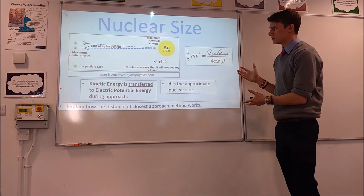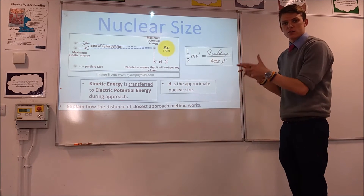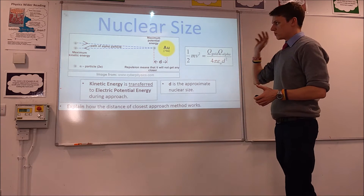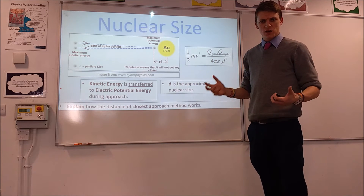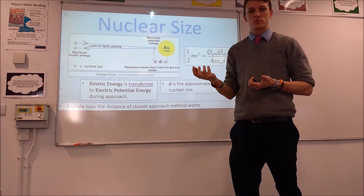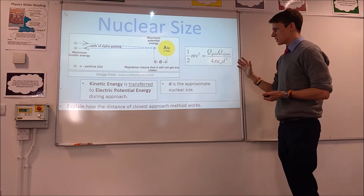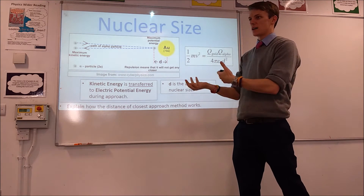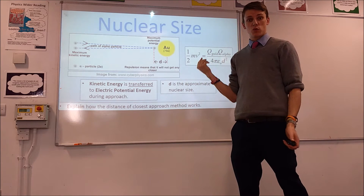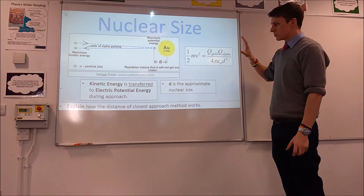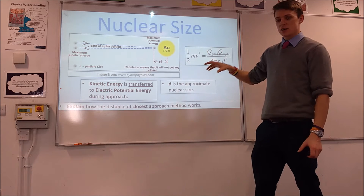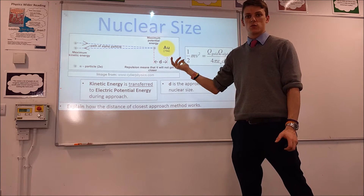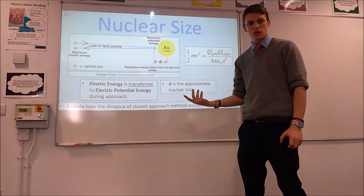Let's start where I left off last time, looking at what the current model has before electron diffraction comes along. The model for estimating the nucleus size is the closest distance of approach model, which was looking at at what point does the strong force come into play — that's roughly the size of the nucleus, so it's an approximation. The problem with this is that the strong force interrupts it and ruins your results at certain points, preventing you from making an accurate measurement.